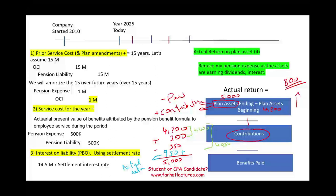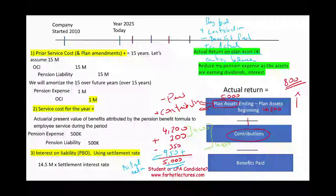Adding the actual return of $950 gives us the ending balance of $5,000. The complete formula is: beginning balance + contributions − benefits paid ± actual return = ending balance. Contributions are typically made by the company, or the company and current employees. The actual return could also be negative. Down the road, I'll explain why we use the expected return rather than the actual return.